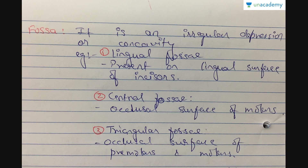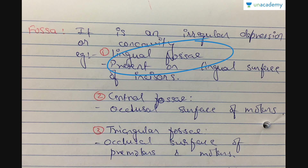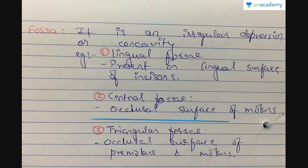A fossa is an irregular depression or concavity. There are different types: the lingual fossa, central fossa, and triangular fossa. These are minor depressions seen on the tooth surface. The lingual fossa is present on the lingual surface of the teeth, the central fossa is at the occlusal surface, and the triangular fossa are present in the occlusal surfaces of the premolars and molars.